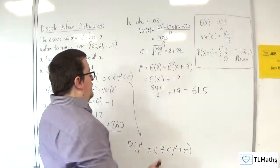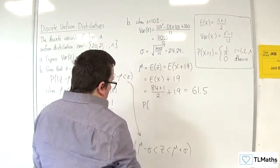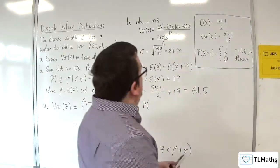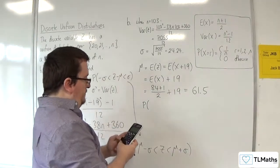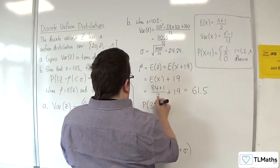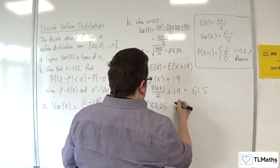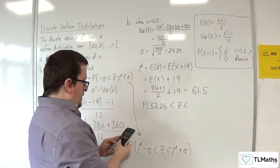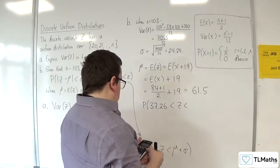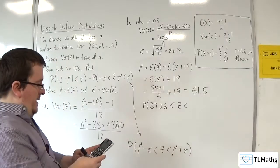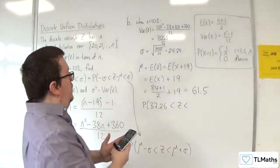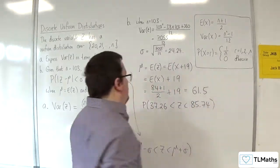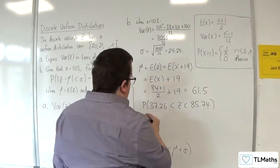This is what we want to find. We want to find the probability of z being greater than μ - σ. What I need is 61.5 take away 24.24, which is 37.26, is less than z, is less than μ + σ, which is 61.5, and then I've got to add 24.24. So 85.74.